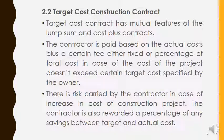The next is target cost construction contract. The target cost contract has mutual features of both lump sum and cost plus contracts. The contractor is paid based on the actual cost plus a certain fee — either fixed or a percentage of total cost. This applies in the case where the cost of the project does not exceed a certain target. If the target is exceeded, the contractor faces trouble.